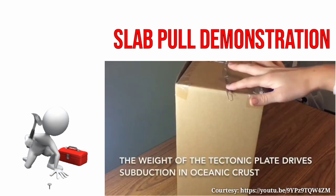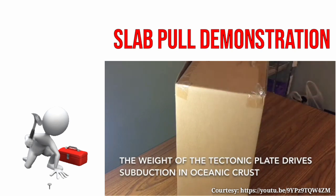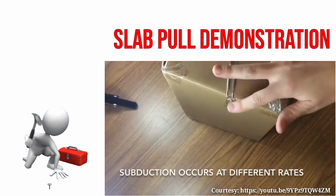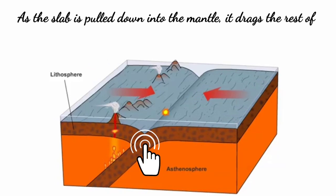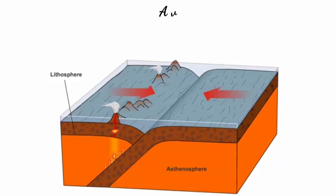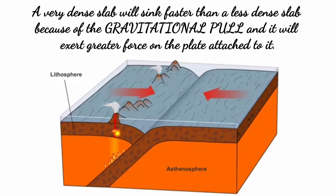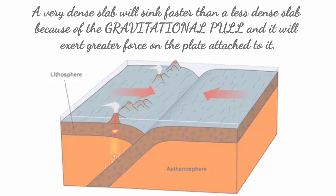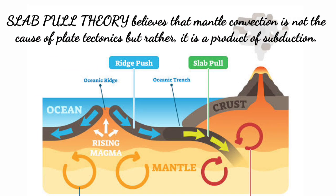The weight of the tectonic plate drives subduction in oceanic crust. As the slab is pulled down into the mantle, it drags the rest of the plate along with it, causing tectonic plate movement. A very dense slab will sink faster than a less dense slab because of gravitational pull, and it will exert greater force on the plate attached to it. Slab-pull theory believes that mantle convection is not the cause of plate tectonics, but rather it is a product of subduction.